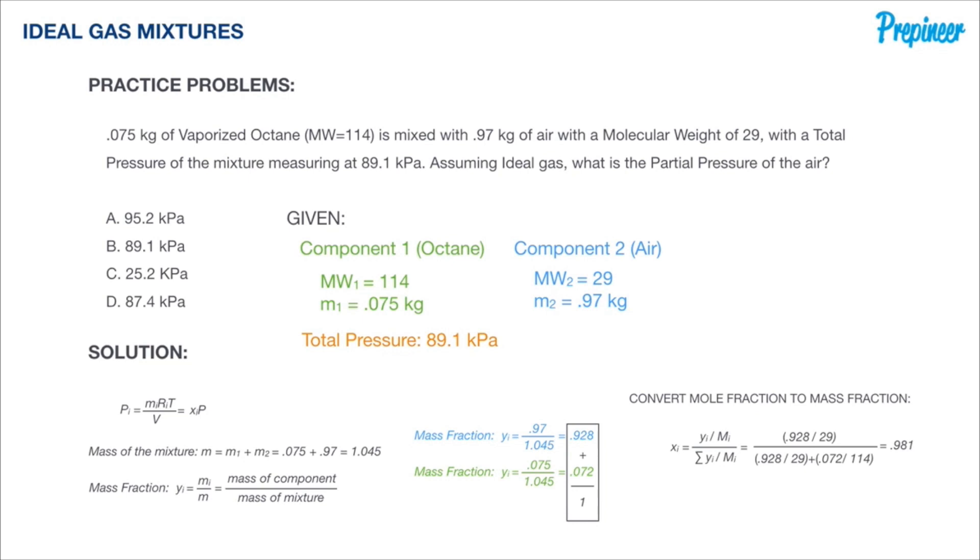So using our hacker formula, we take that 0.981, we put it against our total pressure of the system of 89.1, and we get a partial pressure of air at 87.4 kPa.